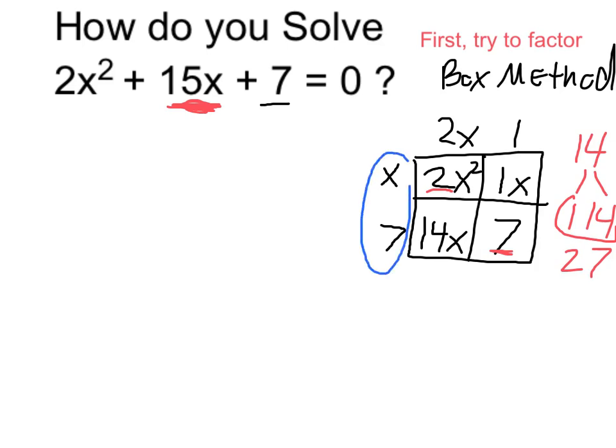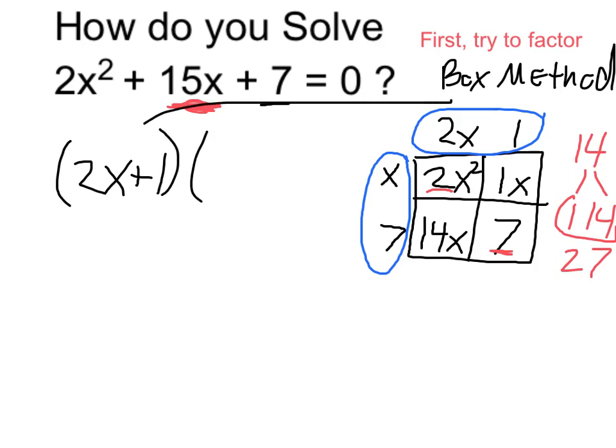So by that process, what we've arrived at outside the box are going to be, in effect, my binomial factors. Therefore, my original trinomial can be rewritten as 2x plus 1 times, and those of course come from here.